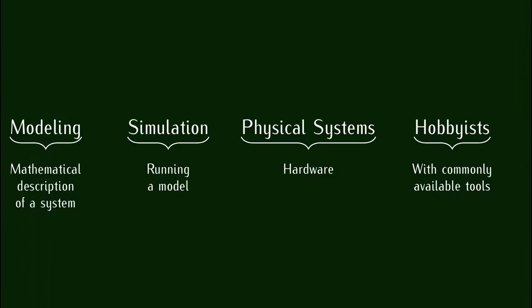On va diviser ce titre pour voir ce que je voulais dire par là et avoir un tour d'horizon de ce dont je vais parler. Dans un premier lieu, la modélisation — dans ce contexte, créer une description mathématique du système. On regarde la physique, par exemple d'un robot qu'on veut construire, un mécanisme ou quelque chose. On extrait les effets physiques qui sont à l'œuvre, on regarde les équations qui représentent ces effets et on met tout ensemble pour obtenir une description mathématique de notre système.